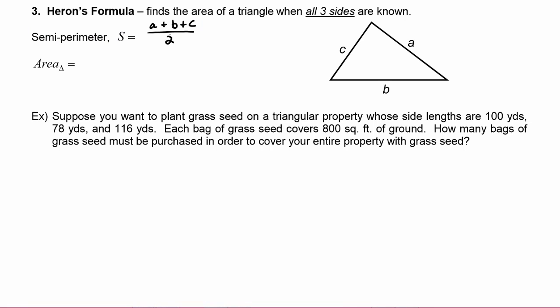Now to find the area of the triangle we take the square root of the product of four numbers. Those four numbers are S, S minus A, S minus B, and S minus C. So we just have to find those four numbers, multiply them, then take the square root of that number and that will give us the area of the triangle.